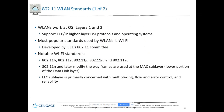Wireless local area networks only work on layers one and two of the OSI model. The most popular standards used by WLANs are Wi-Fi, defined by the IEEE's 802.11 committee. There are many notable 802.11 standards. The 802.11 standard modified the way frames are used at the MAC layer — that's why it's a little different on Wi-Fi than wired, because layers one and two are different.